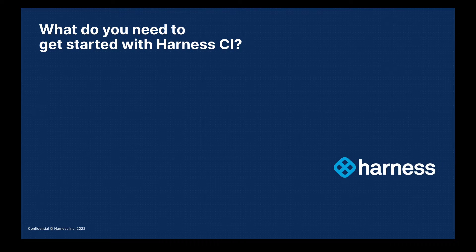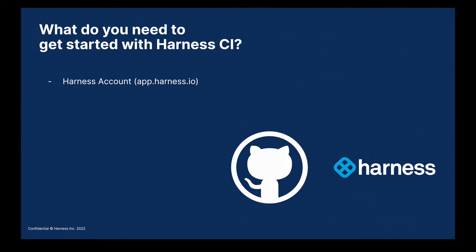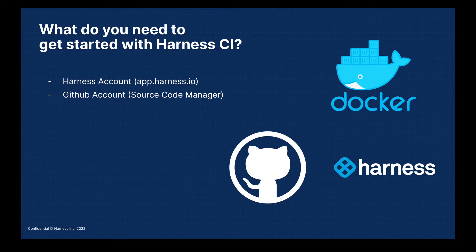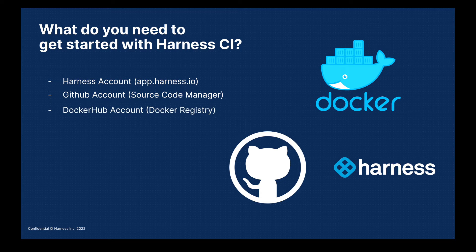So what do you need to get started? First of all, you'll require a Harness account hosted at app.harness.io. You'll also require a GitHub account, which will act as your source code manager. And last, you'll require a Docker Hub account, which will act as a Docker registry. And that's all you need to build your very first pipeline with Harness.